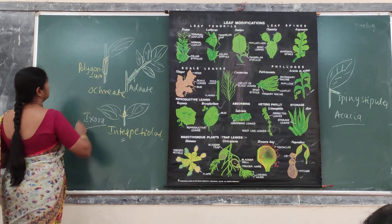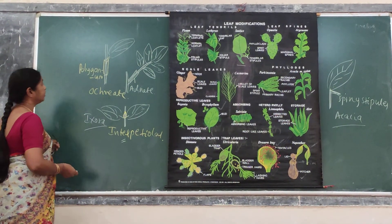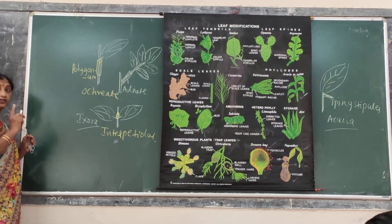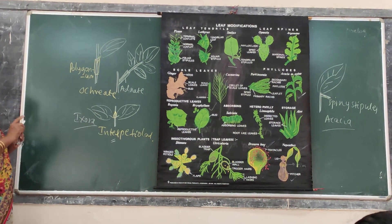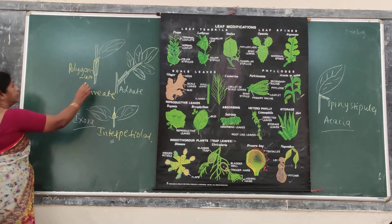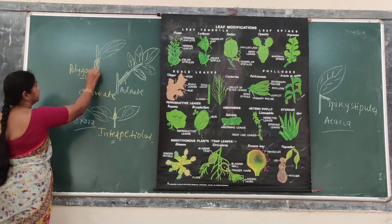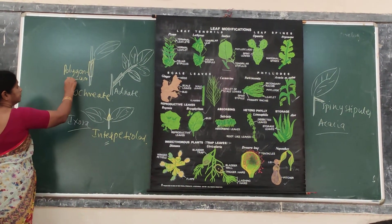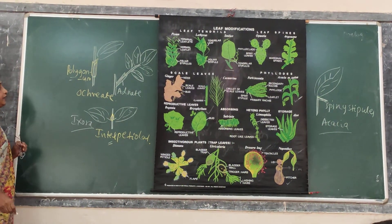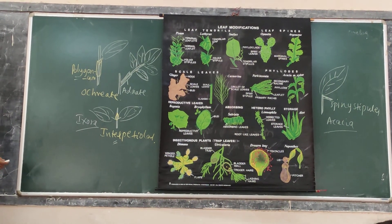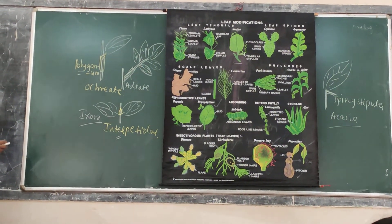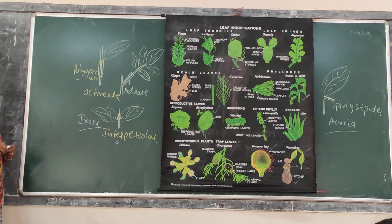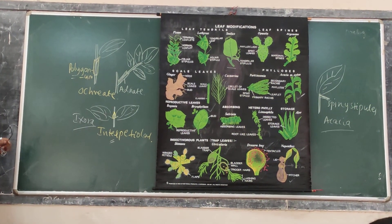Coming to the ocreate stipules — the stipules encircle the internodal part of the stem, and such a type is called ocreate, observed in case of Polygonum. So these are all different types of stipules.